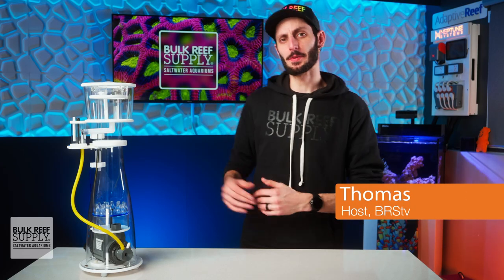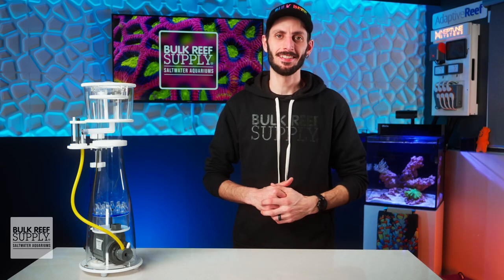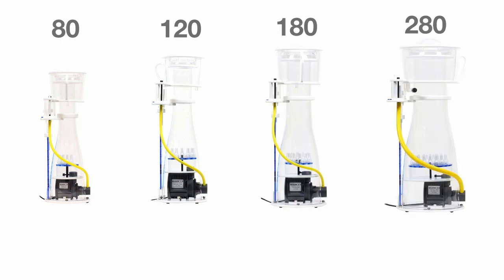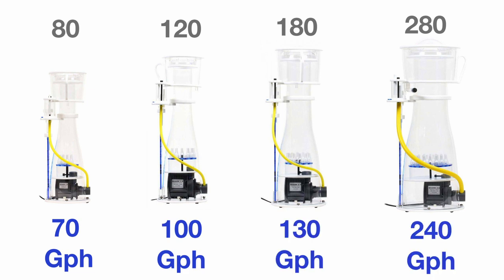The FC line of skimmers come in four different sizes: the 80, 120, 180, and 280, rated for tanks up to 70, 100, 130, and 240 gallons respectively,